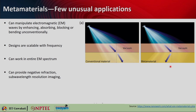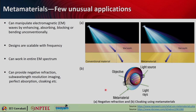Interesting applications with metamaterials include negative refraction, sub-wavelength imaging, perfect absorption, and cloaking. Cloaking means hiding an object — it happens by bending light around a particular object. From the observer's perspective, the light rays appear to come from the source undisturbed because they are actually getting bent around the object. This is the fundamental principle of cloaking — using metamaterials to hide a particular object from detection.